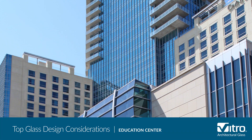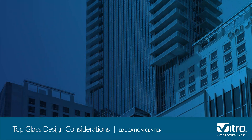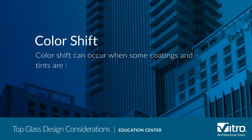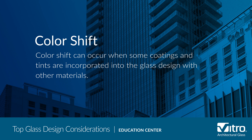The next consideration is color shift. A transmitted and reflected color shift can result when various coatings and tints — such as low emissivity coating, an opacifier coating, or a tinted interlayer material, among other things — are incorporated into the glass design. In addition, a coating used in an insulated glass unit can appear different than if that same coating is used in a laminated application.